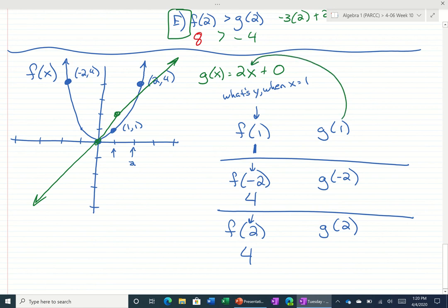So if we plug in 1 for x, what's the y value? Or what's g of 1? 2 times 1 is 2, plus 0 is 2.